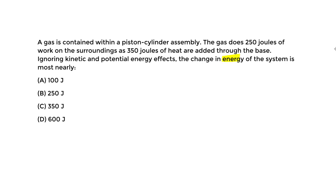We want to find the change in energy of the system. We have two things: work and heat. The difference between work and heat is the change in energy of the system — the change in internal energy. This is based on the first law of thermodynamics. In the FE handbook, the first law is defined as a statement of conservation of energy: the net energy crossing the system boundary is equal to the change in energy of the system.